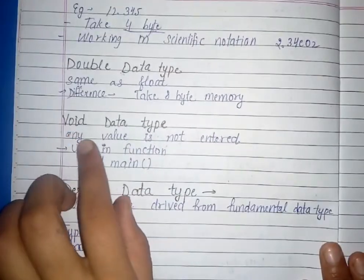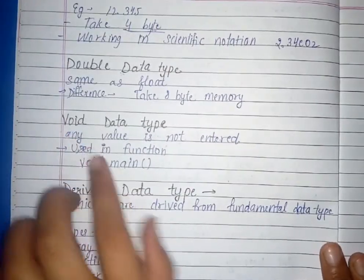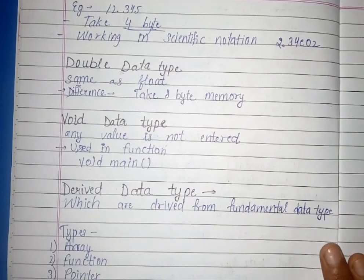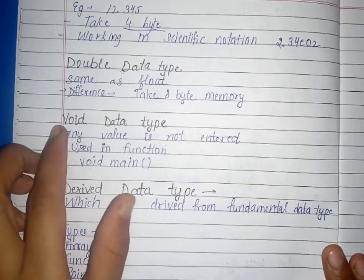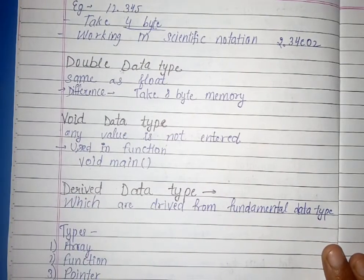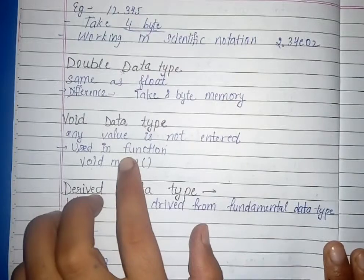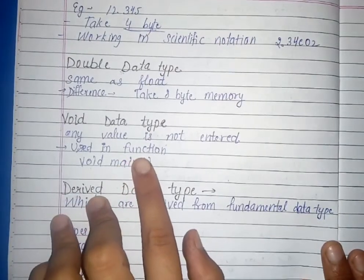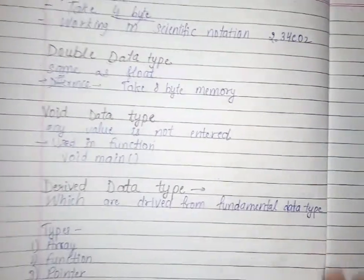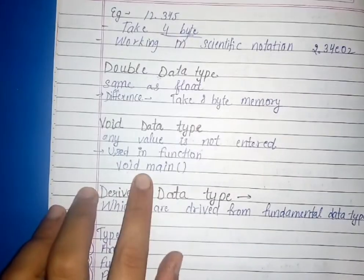Void data type. Void data type, any value is not entered in which there is no value entered. Void means empty, void means 0. This is used in function. When we study in derived data type, we study functions, then I will tell you that void is used in function.